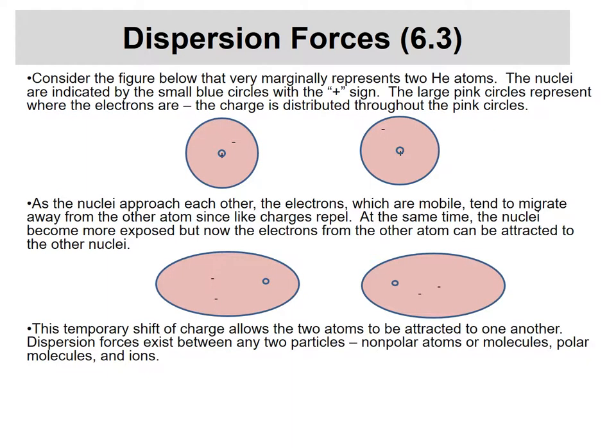Starting with dispersion forces — section 6.3. Here I have two helium atoms. In the center is the nucleus with a positive charge — two protons for helium. Each helium atom has two protons and two electrons. Both atoms are electrically neutral: plus two and minus two each, so there's no charge-based attraction between them. But look at what happens as these two nuclei start getting close to each other — the atoms become somewhat oblong.